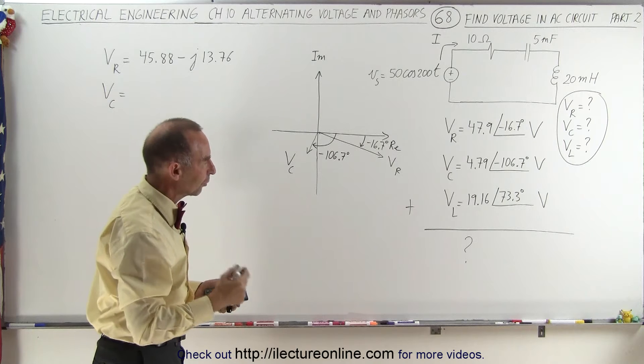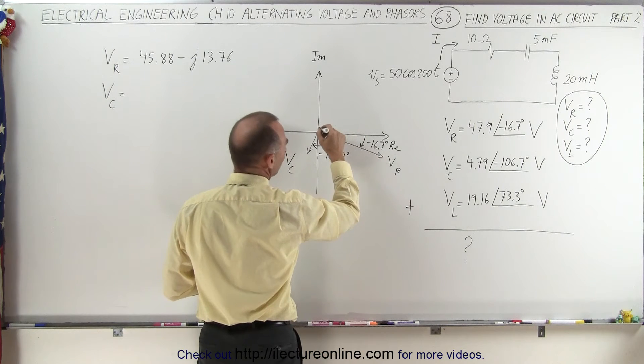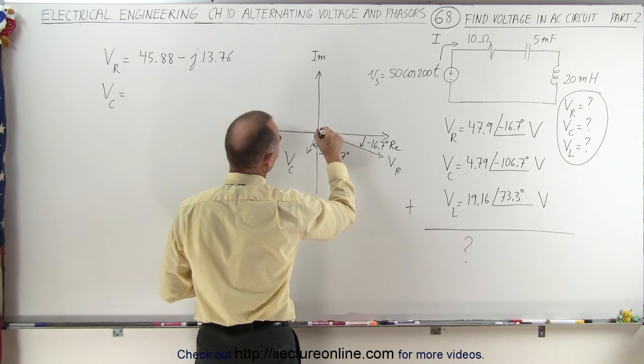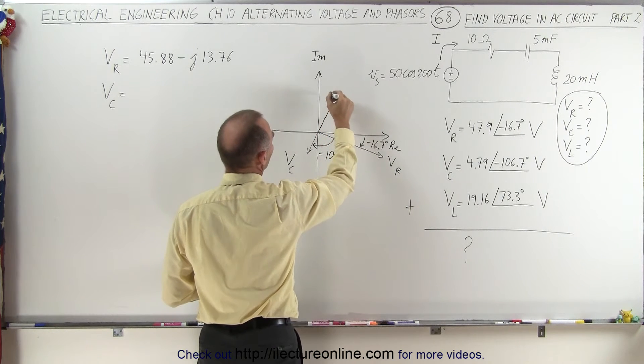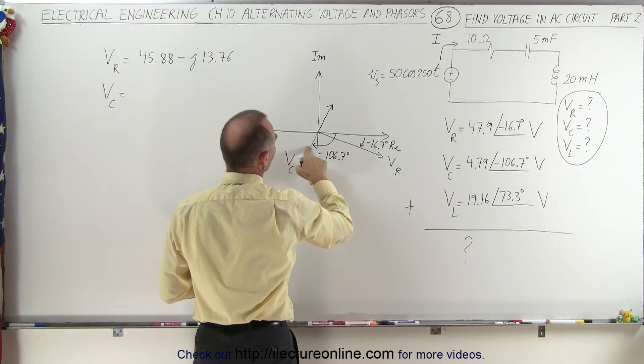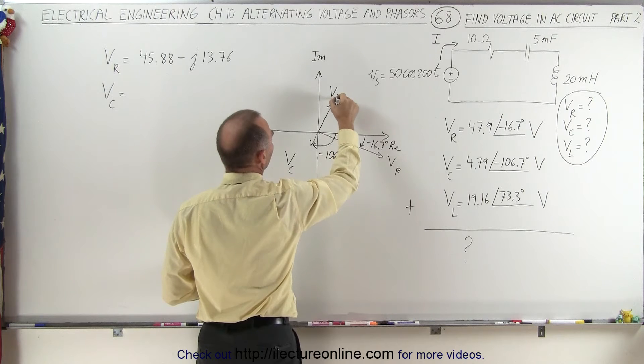And now the voltage across the inductor will have a phase angle of a positive 73.3, which is a right angle with this one as well. So directly like this, 19.6 volts. Let's make this a little bit shorter. And that would be V sub L.